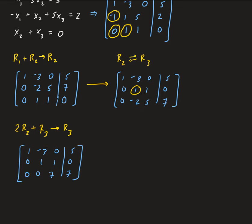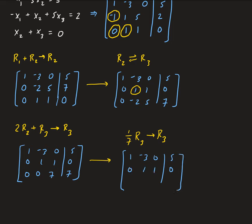One more step: we can divide row 3 by 7 — take one-seventh of row 3 and store that in row 3. It's not necessary, but it demonstrates one of the row operations. So the final upper triangular matrix has rows: 1, negative 3, 0, 5; then 0, 1, 1, 0; then 0, 0, 1, 1.